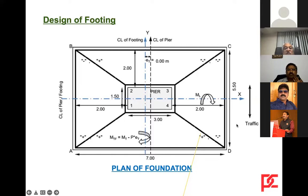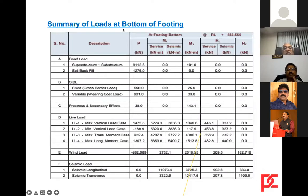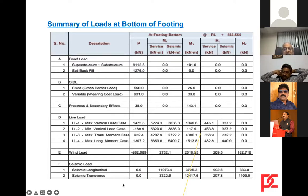Then we go for foundation design. The foundation has a vertical load and biaxial moments. A summary of loads at the bottom of the footings is done based on dead load, SIDL, pre-stressing secondary effects, live load, wind load, and seismic load — all tabulated. The foundation adopted is 5.5 meters by 7 meters. Section properties, Z values are calculated, and then P/A ± ML/ZL ± MT/ZT is used to calculate base pressures at the four corners.